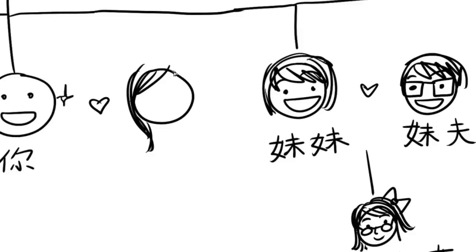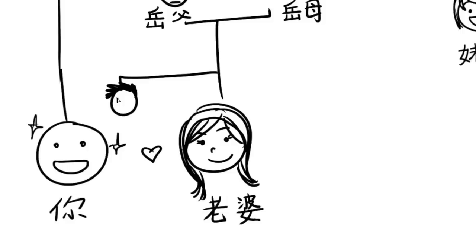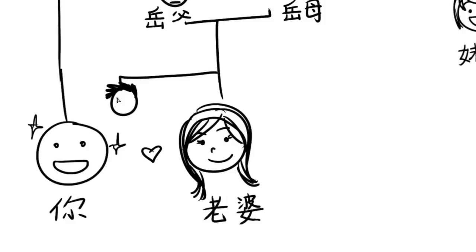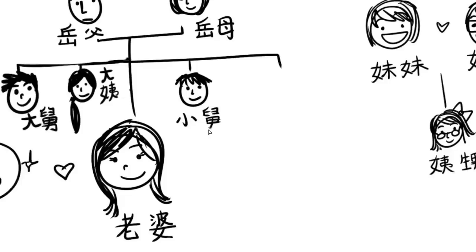Okay, now you finally get married. If you are a dude, your wife is your 老婆, your wife's dad is called 岳父, and your wife's mom is called 岳母 — unless you are talking to them directly, then you just call them 爸爸妈妈. And if your wife has siblings, her older brother is called 大舅, her older sister is your 大姨, her younger brother is called 小舅, and her younger sister is called 小姨.